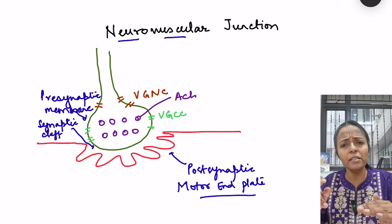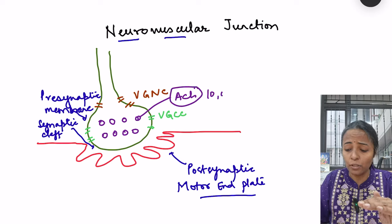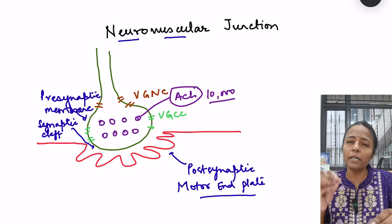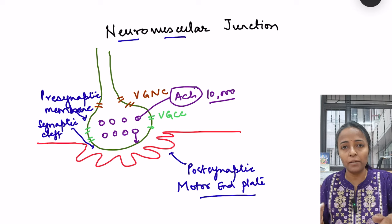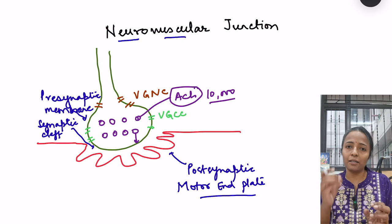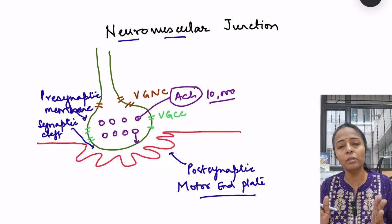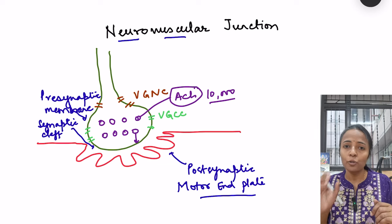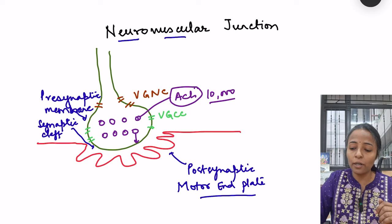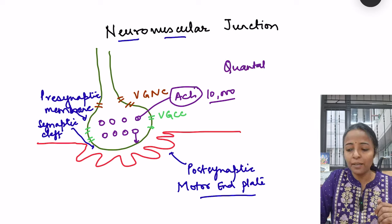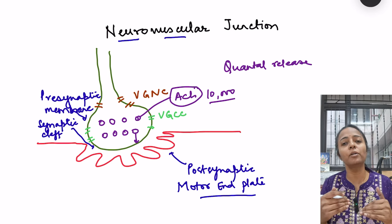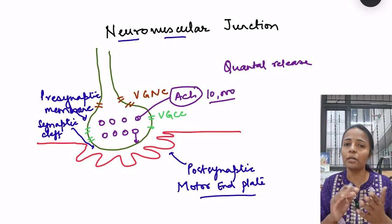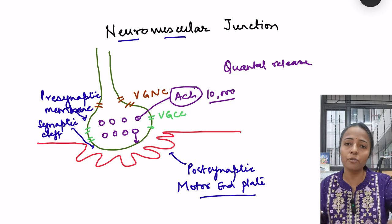Each vesicle contains 10,000 acetylcholine molecules, and this is known as one quantum. Whenever a signal comes, at least one vesicle fuses with the membrane — so at least 10,000 molecules of acetylcholine are released. If two vesicles fuse, then at least 20,000 molecules are released. This is known as quantal release of acetylcholine, determined by multiplying the number of fusing vesicles by the number of acetylcholine molecules per vesicle.